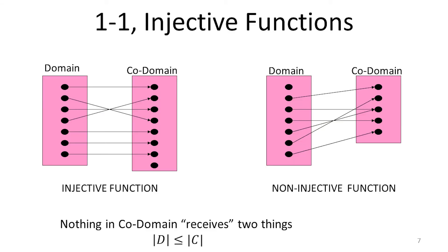One of the most interesting ways to use functions is to compare the cardinalities of different sets. A one-to-one or injective function says that nothing in the codomain can receive two things — different things in the domain must map to different things in the codomain. So in order for that to be possible, there must be at least as many things in the codomain as in the domain. If the domain were larger than the codomain in a total function, we'd have no choice but to map two things from the domain to the same thing in the codomain. This is the pigeonhole principle.